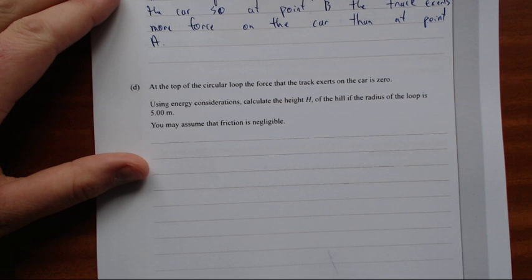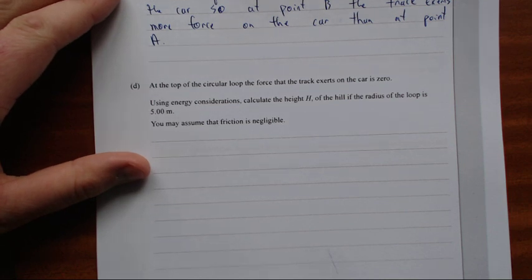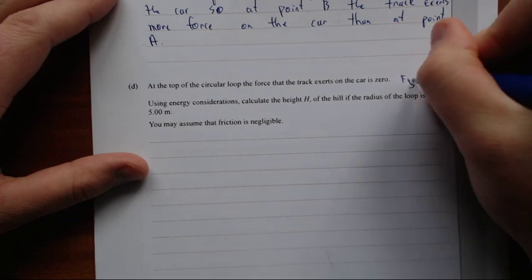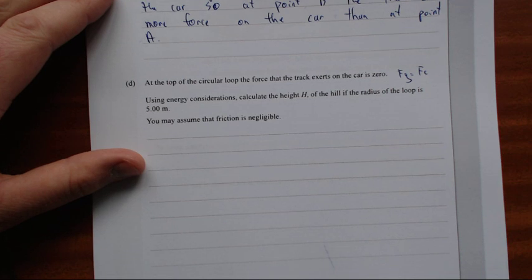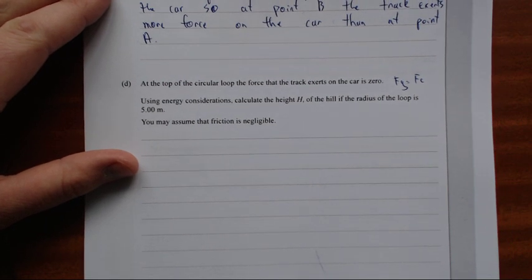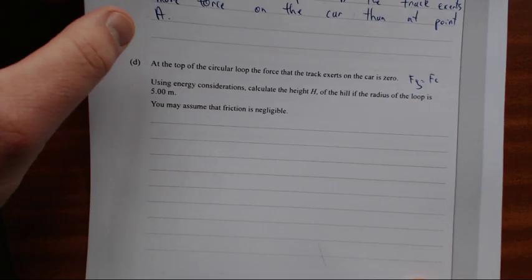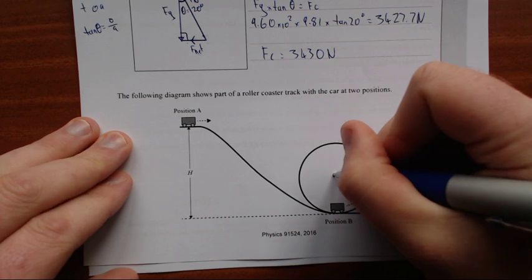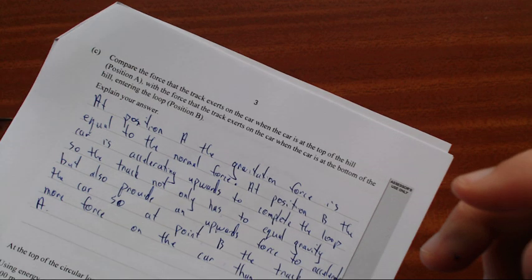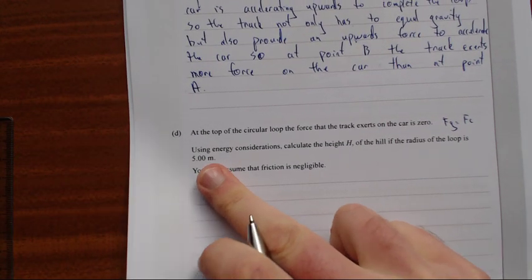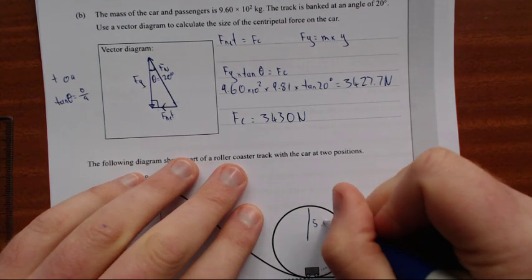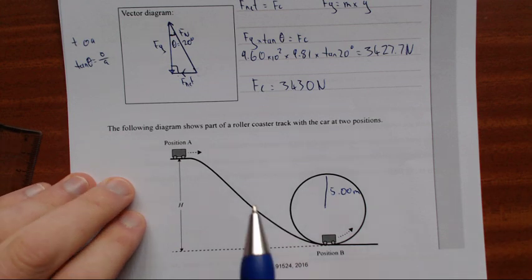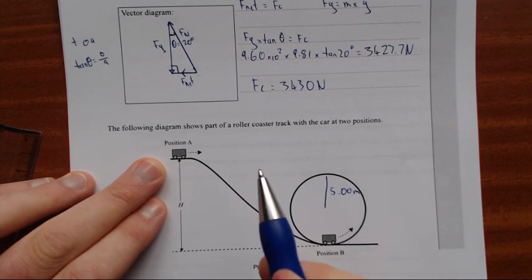Now this is a bit of a doozy. At the top of the circular loop, the force the track exerts on the car is zero. So that basically means Fg equals Fc. Using energy considerations, calculate the height h of the hill if the radius of the loop is 5 meters. You may assume friction is negligible. Okay, so let's draw on what we know. We've got the radius, that's 5 meters. So now let's walk through what actually happens. Here, the car only has potential energy, it's only got gravitational potential.